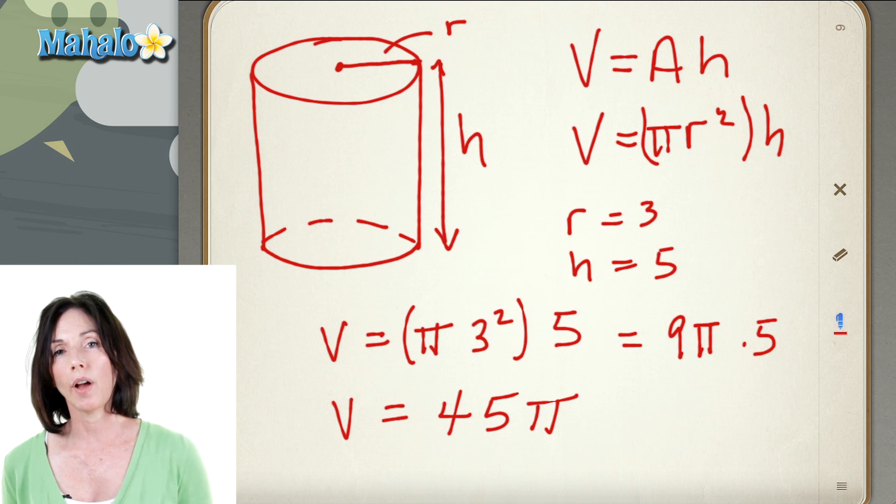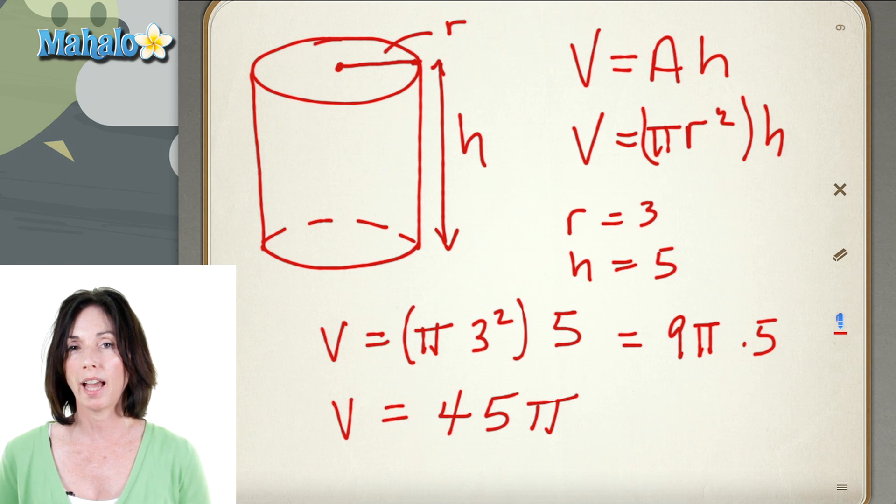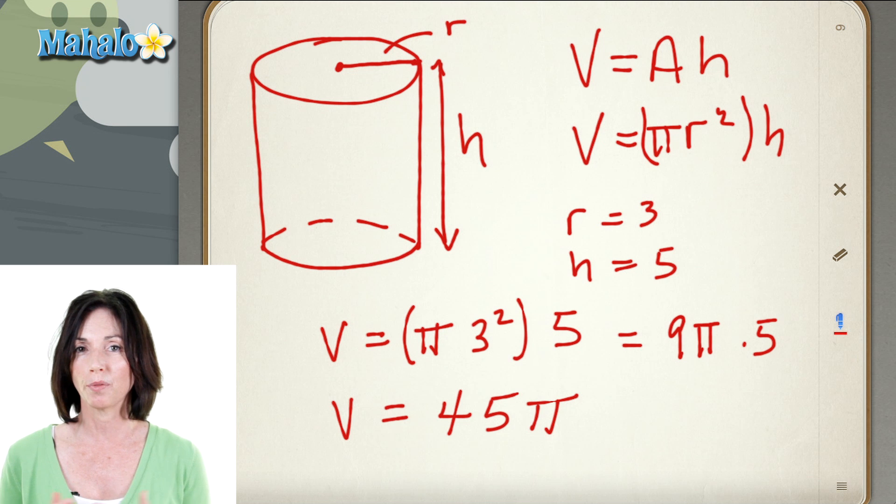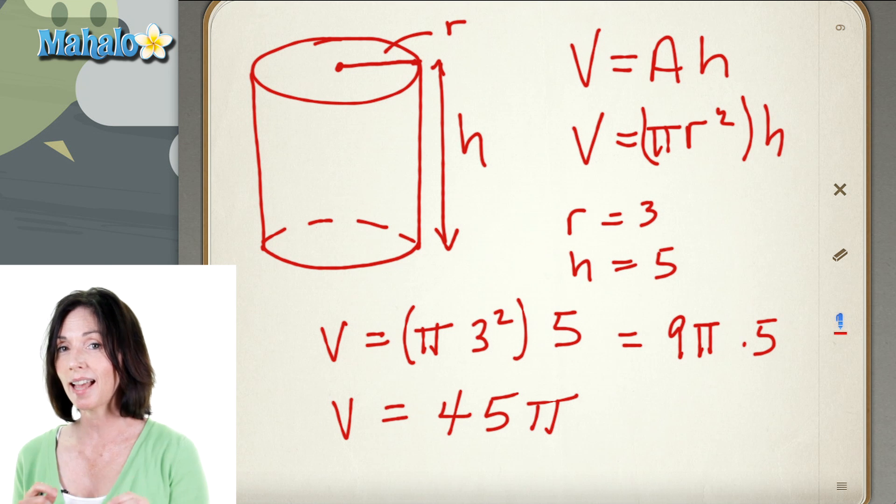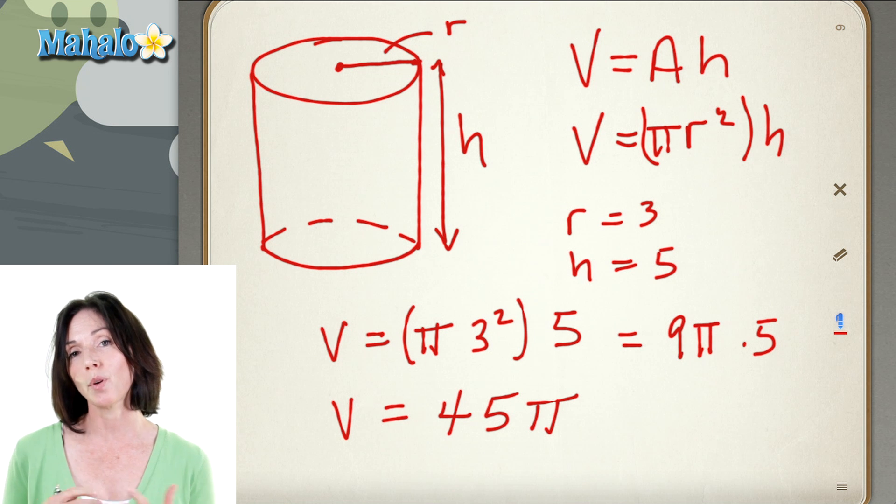And if you wanted to find an approximation to that, you could approximate pi as 3.14 and do the multiplication. But the exact volume of this cylinder is 45 pi.